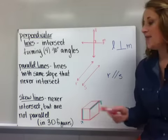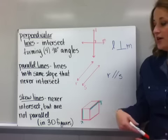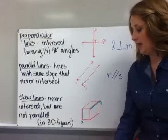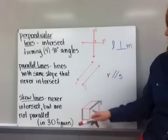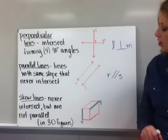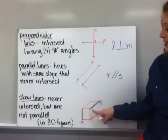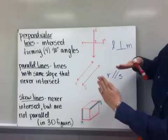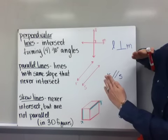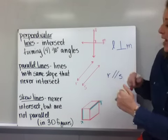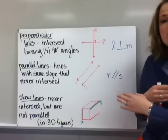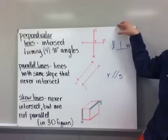And skew lines. These are lines that never intersect, but they're not parallel. And that's because in 3D figures, they're on separate planes. So, if you look at this rectangular prism here, I've tried to highlight it in green. Line X and line Y will be kind of like how my arms are right now. They're on different planes and if they were to continue on, they're not going to intersect, but they are not parallel.